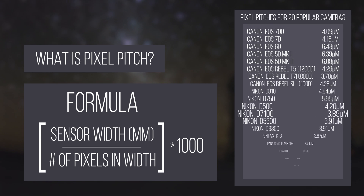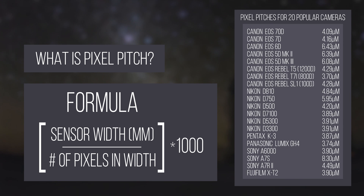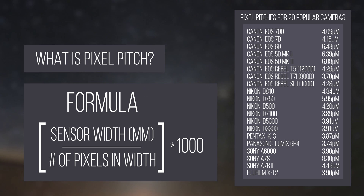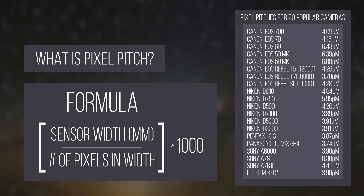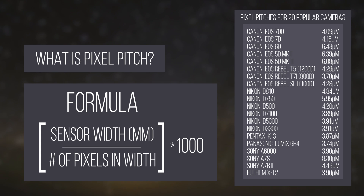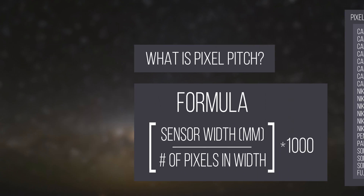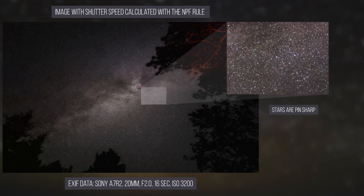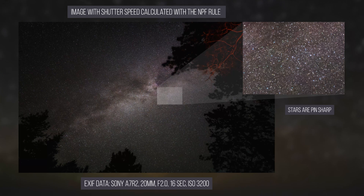On screen are the pixel pitches of the top 20 most popular cameras on the market currently, and I will include a link to the spreadsheet with more cameras. The NPF rule will likely yield a much faster shutter speed than the 500 rule, but it will guarantee sharp stars every single time.